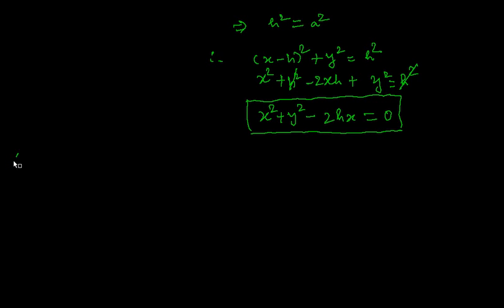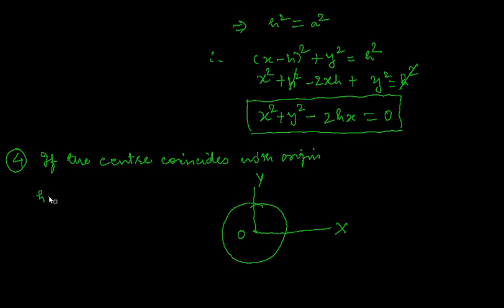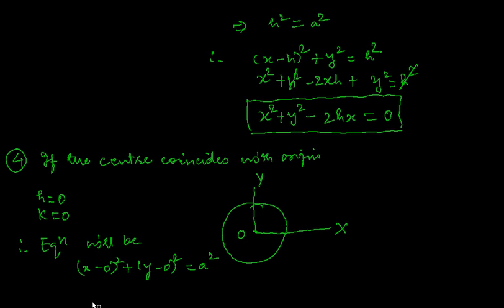Case 4: the center coincides with the origin. In this case h = 0 and k = 0. Therefore the equation becomes (x − 0)² + (y − 0)² = a², which simplifies to x² + y² = a². This is the equation of the circle when the center is at the origin.